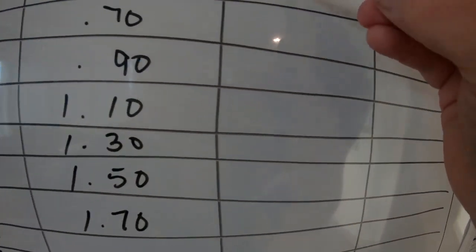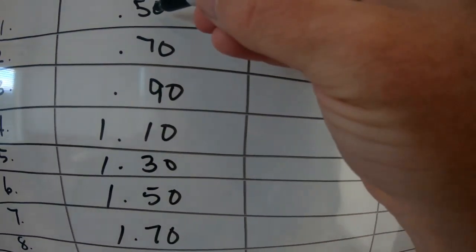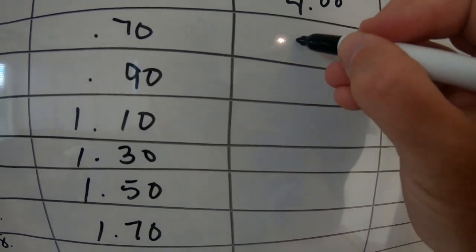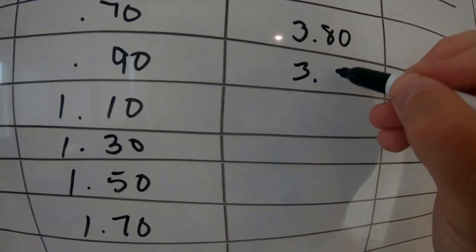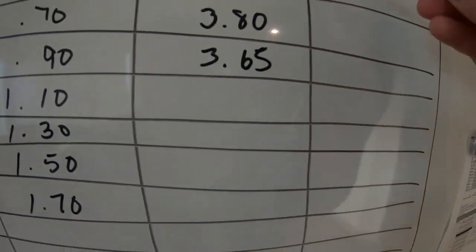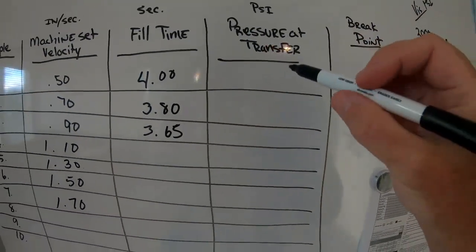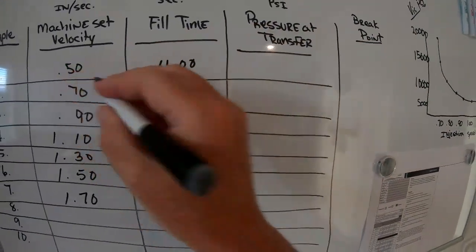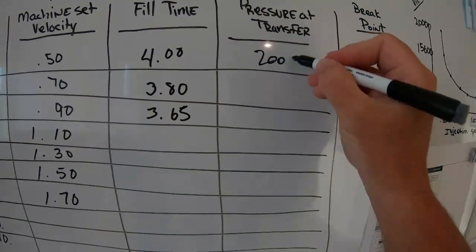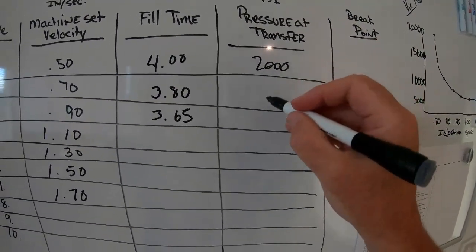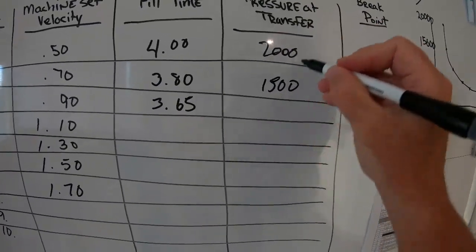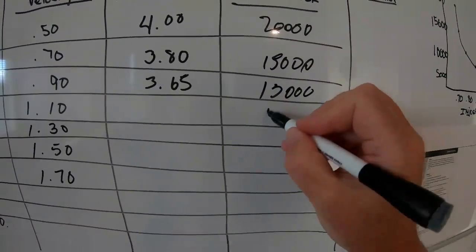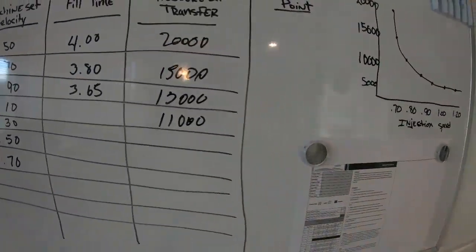As you fill in your fill times, the slower the speed, the longer your time will be — so this might be 4 seconds, the next one might be 3.8, then 3.65, and you keep going down. You also write down the pressure at transfer. At slower speeds the pressure will be higher — maybe at 20,000, then the next at 15,000, dropping down to 13,000 then 11,000 — and you're looking for your curve to emerge from that data.